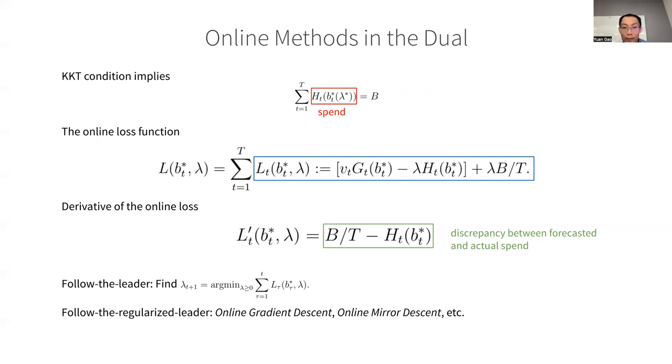The other well-known online methods, such as online gradient descent and online mirror descent, can also be used, which translates to additive and multiplicative updates in lambda, based on the discrepancies between the forecast and actual spend. The benefits of these methods is that they don't require access to the auction log.